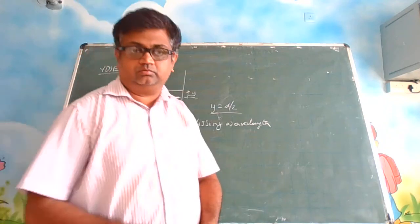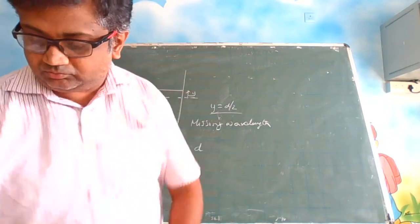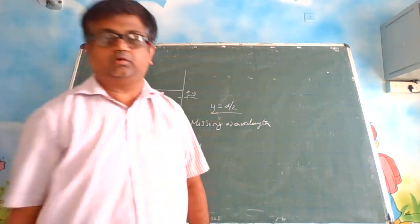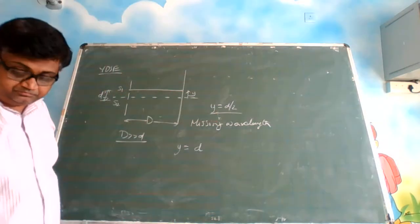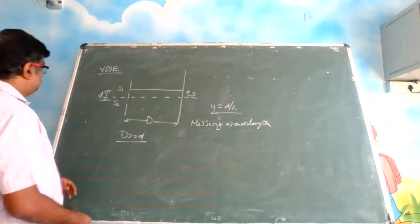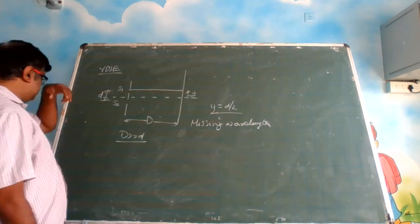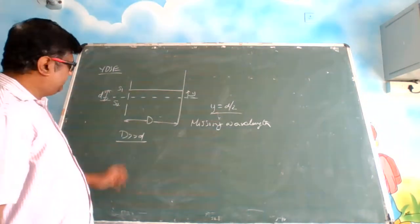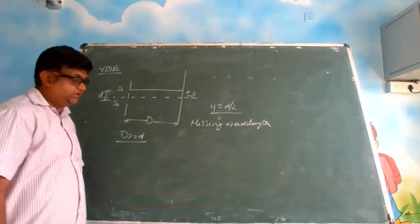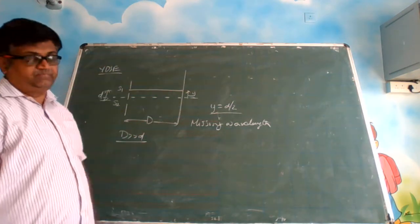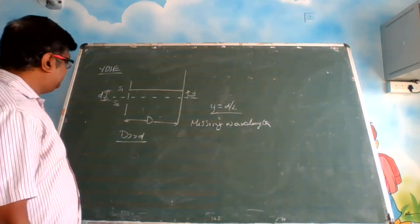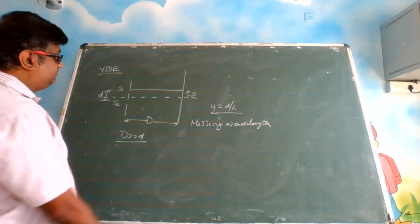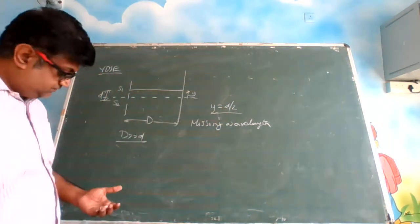Let us see some more concepts. A question is given with a YDSE setup — there are two slits, the slit gap is small d, and the slit-to-screen distance is capital D. The question asks: at y equal to d by 2, what are the missing wavelengths?